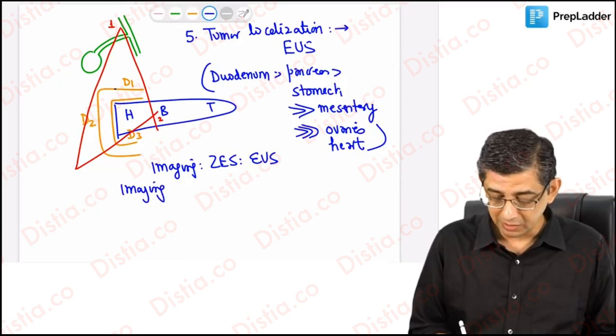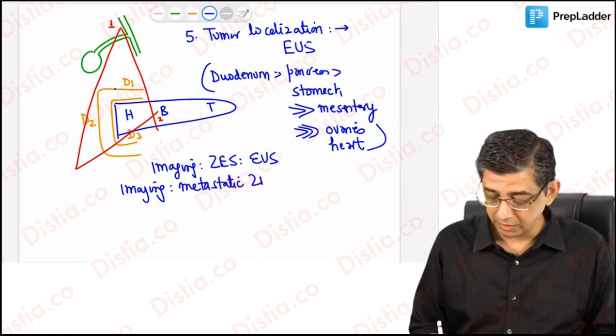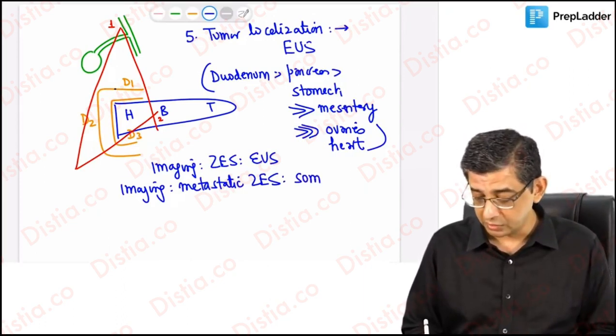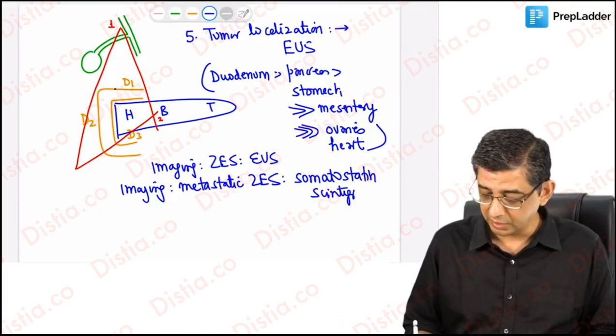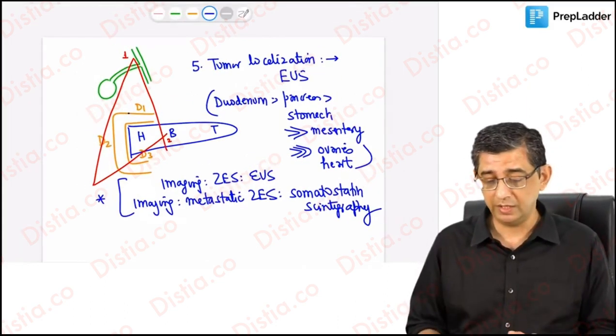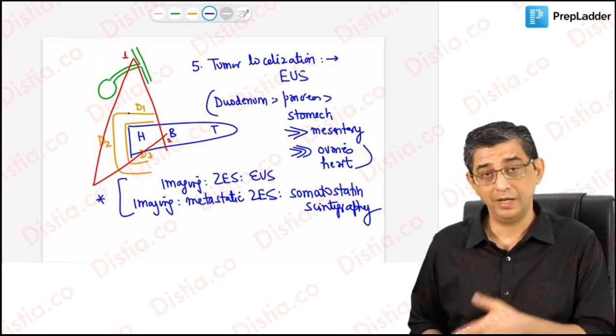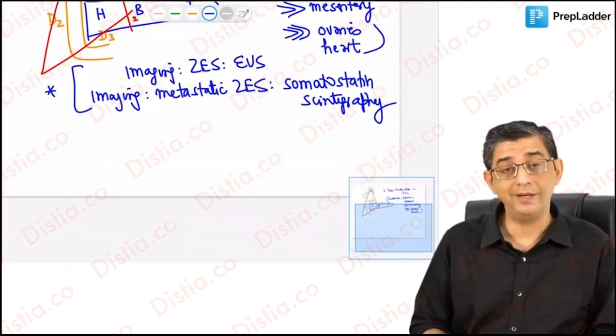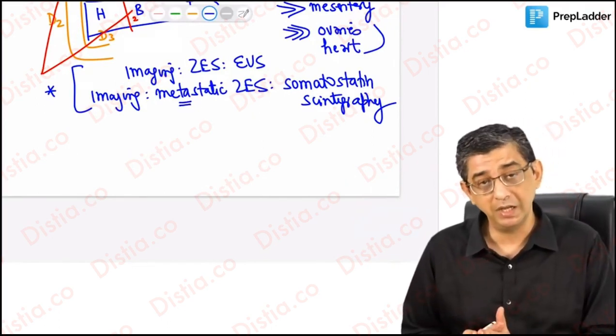I would like to highlight: imaging modality of choice for evaluation of a gastrinoma or Zollinger-Ellison is to be answered as endoscopic ultrasound. The language of the question will be: what is the imaging modality of choice for metastatic Zollinger-Ellison syndrome? When the cancer will spread, you need to go for scans. The scan that you will go in this case would be answered as somatostatin scintigraphy. Please be very particular for these two statements. I would rate this particular slide as the most important slide of this discussion.